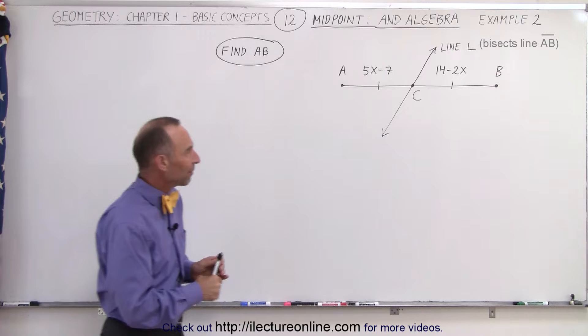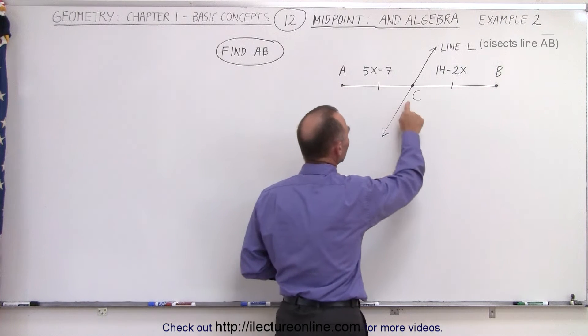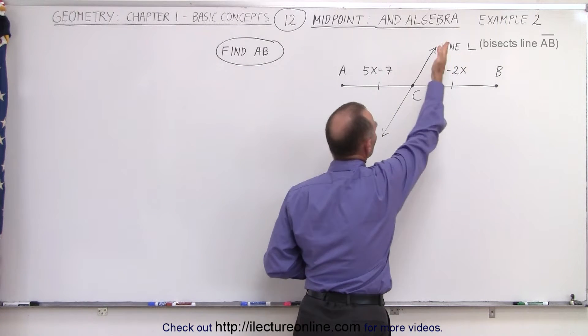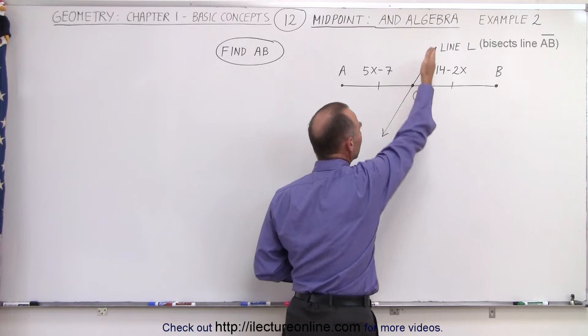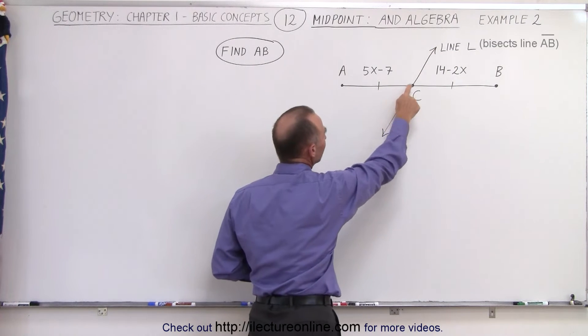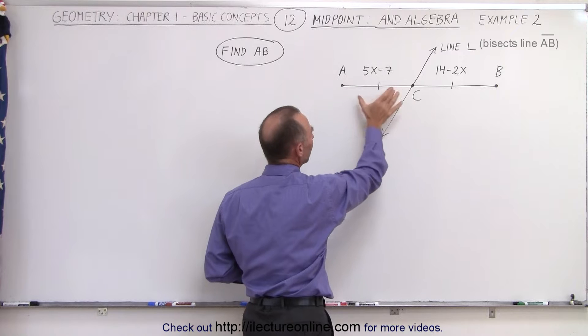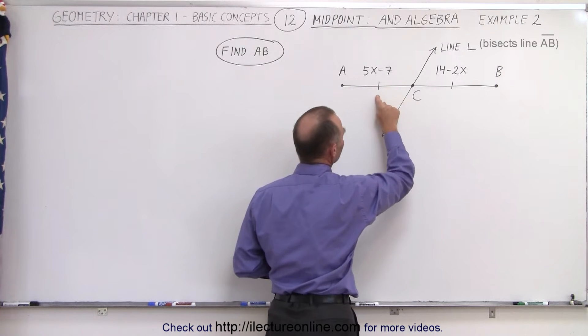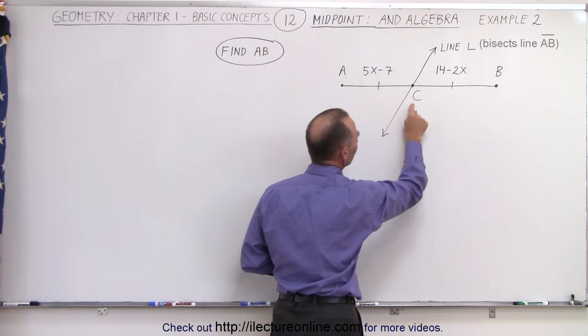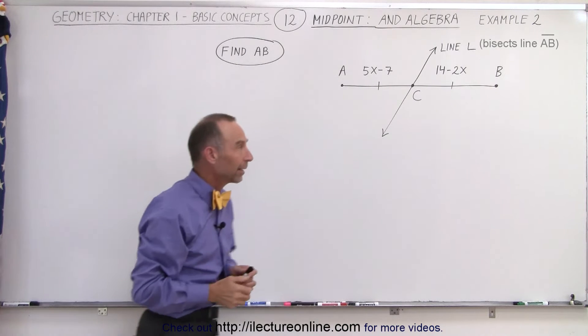Here we have a line segment from A to point C to point B. You can see that the line segment is intersected by the line L at the midpoint. We call that point C and this indicates that those two line segments from A to C and from C to B must be equal in length.